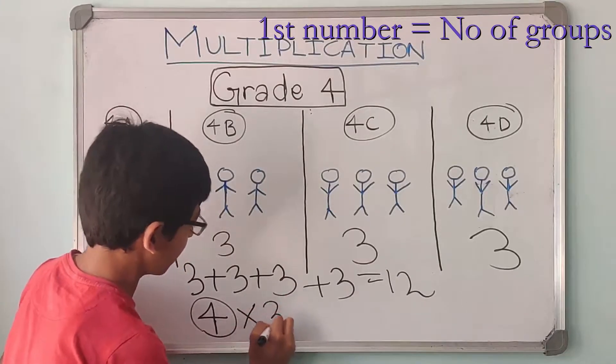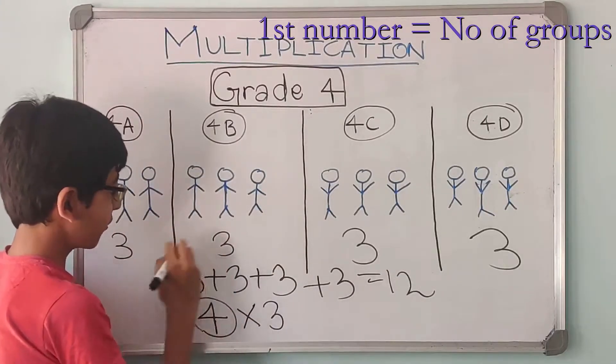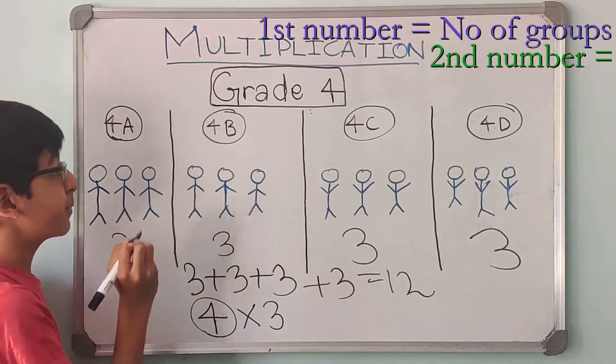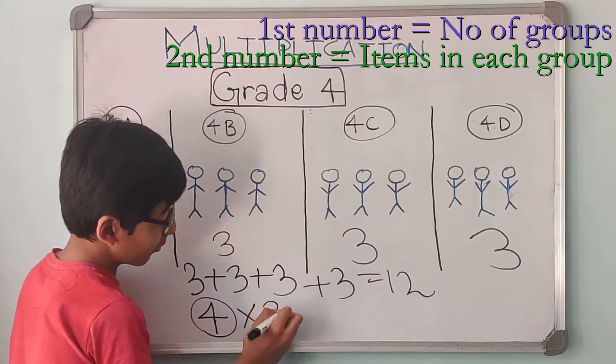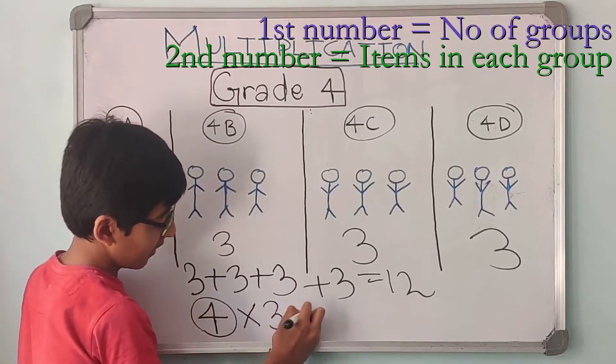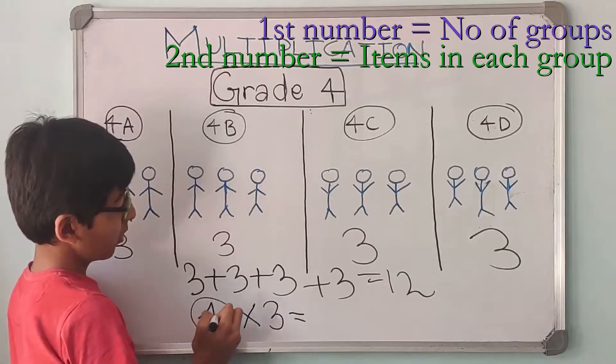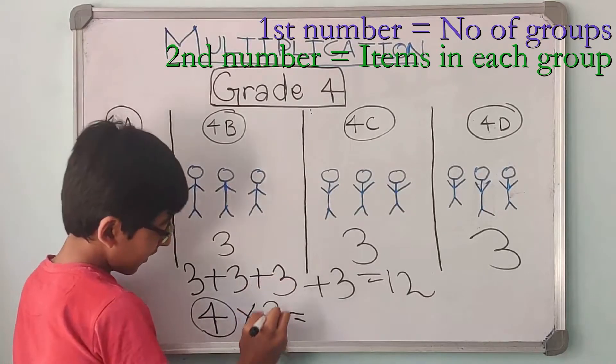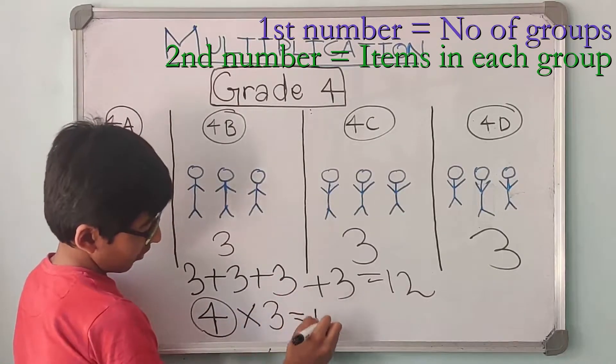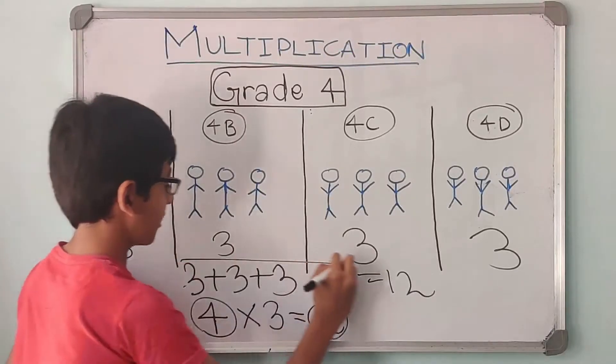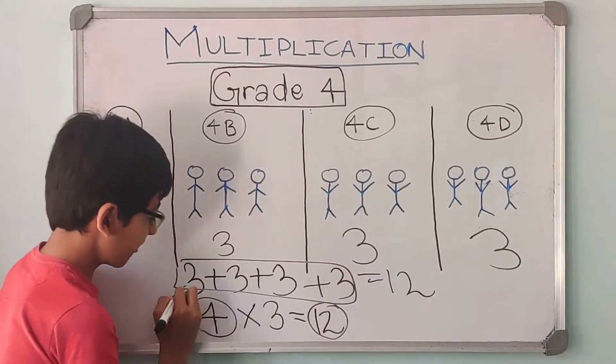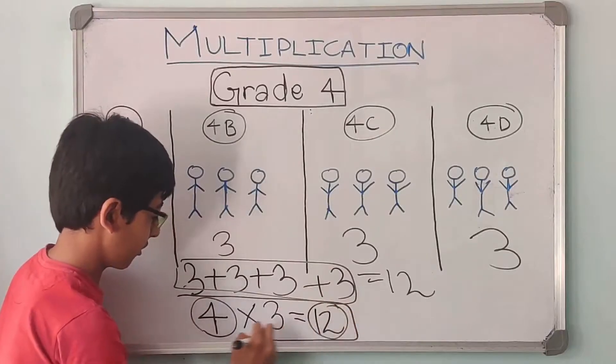The second number we will write 3. 3 is the number of items. Over here the number of people in each classroom, or it can be number of items in each group. So like this, 4 multiplied by 3 is going to be same as 12. So rather than writing 3 repeatedly, we could just write it as 4 into 3 is equal to 12.